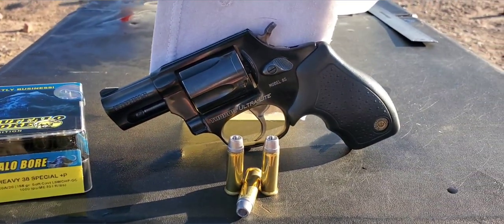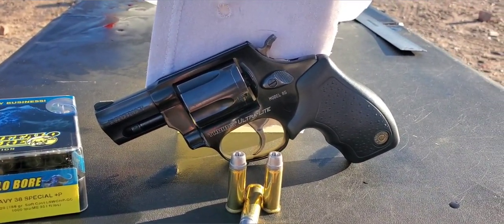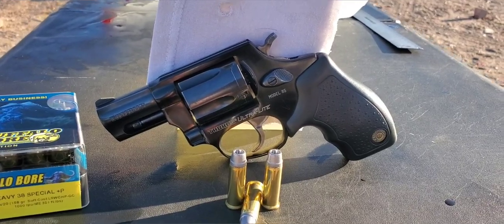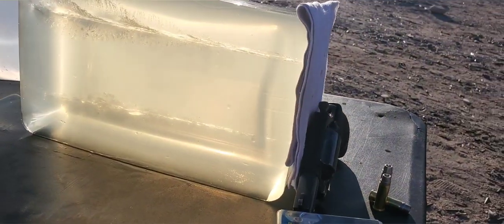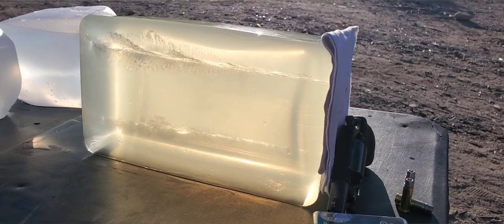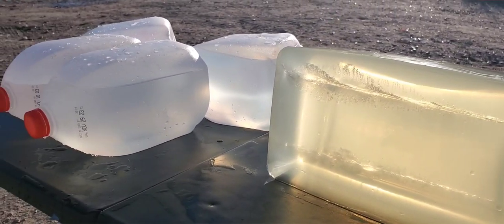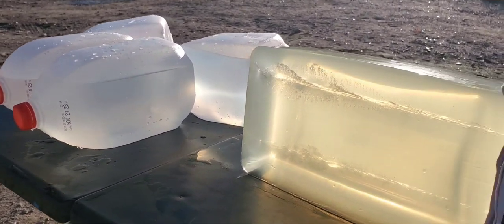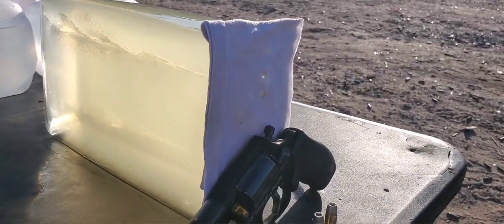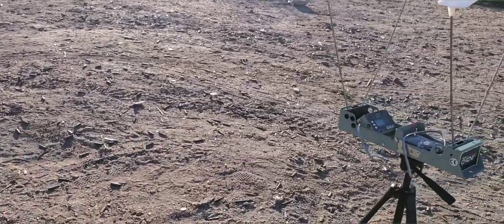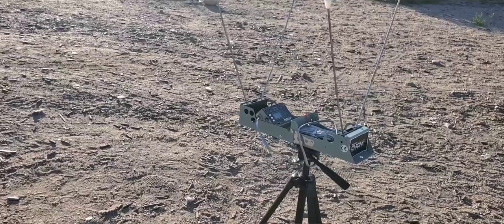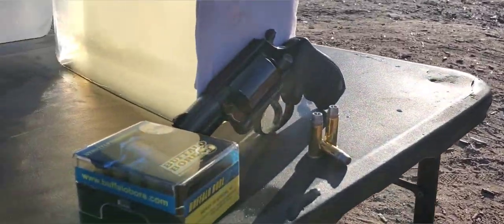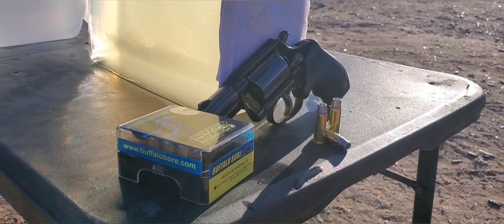So we are going to be going out of our Taurus Ultralight. That is the model 85, 2 inch snubby, and it looks like we have just enough room in this gel. We could probably sneak one by. So that is our 10% block. We do have our jug backstop just in case we do get that pass through, and our four layers of cotton t-shirt on the front. So like always we will set our chronograph up in front, so hopefully pick up the impact velocity, and we'll see what this one can do. This one is the FBI load.